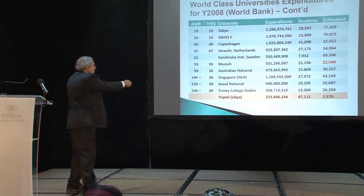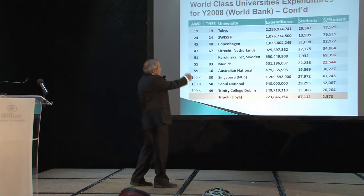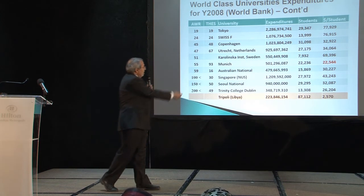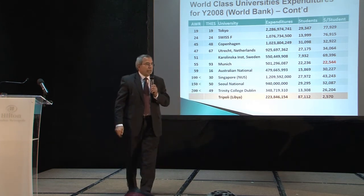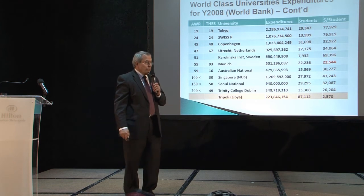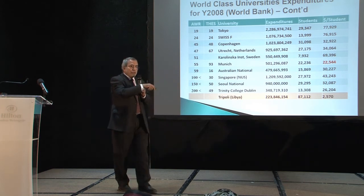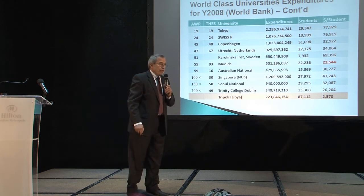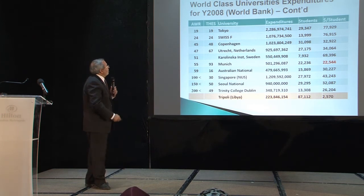If you look at Tripoli University at the bottom: in terms of student numbers we have 87,000, and now the number is over 100,000. In the 2013 budget, we spent $2,500 per student. Using the current number of students — over 100,000 — that figure drops to probably below $2,000 per student per year. Compare that to other universities spending $20,000 to $100,000 and above per student. So what do you expect?